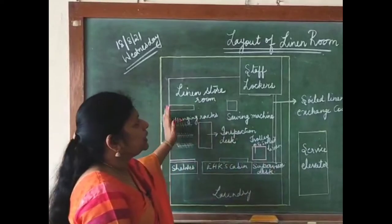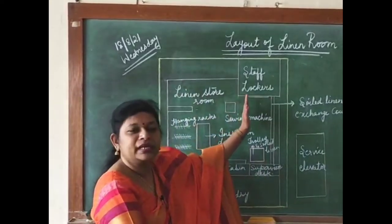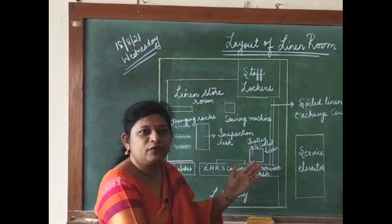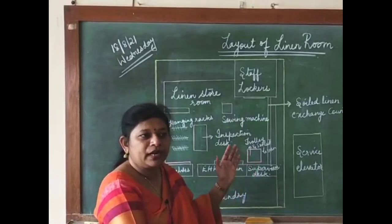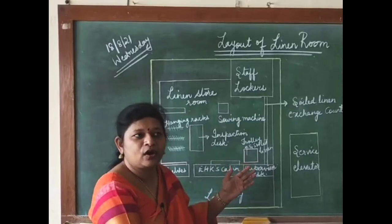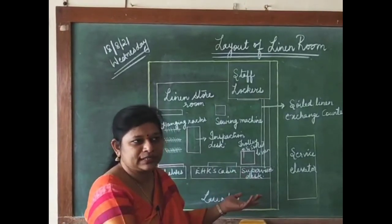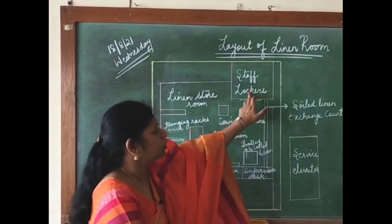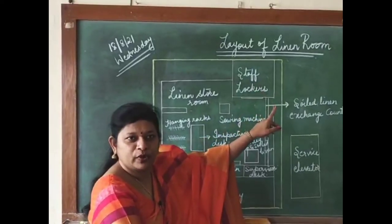The layout of the linen room starts with staff lockers. The reason we have staff lockers is that in some hotels, the uniform room and the linen room are the same. Depending upon space availability, the hotel will decide whether to have a separate uniform room and linen room or combine both in the same place. Staff can collect their uniforms, go to the lockers to change, and return to work.